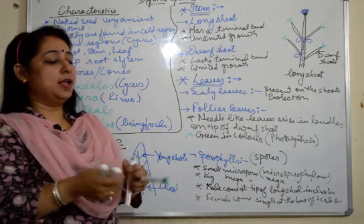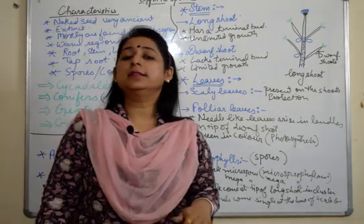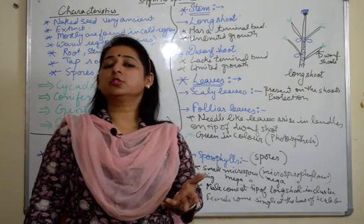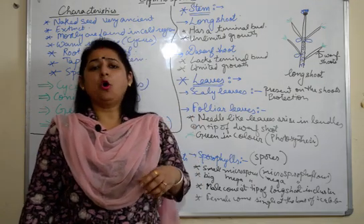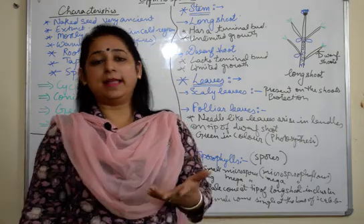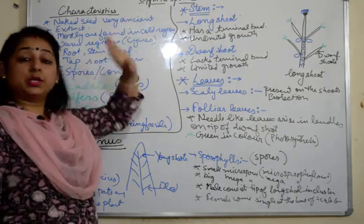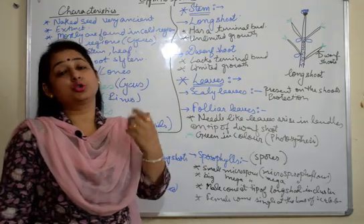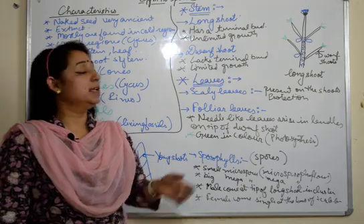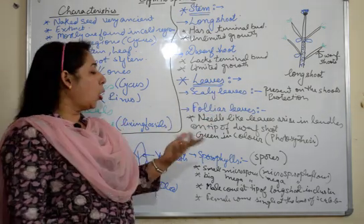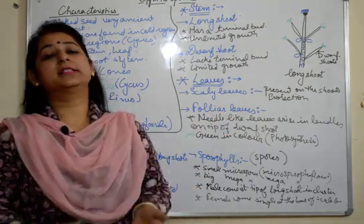There is one common feature among foliar and scaly leaves: both of them have sunken stomata. Sunken stomata is a characteristic feature that prevents excessive transpiration and loss of water. Since pinus is found in cold regions where it can snow, the plants need to store water and cannot undergo excessive transpiration. Additionally, foliar leaves are needle-like with very small surface area, which further reduces transpiration.